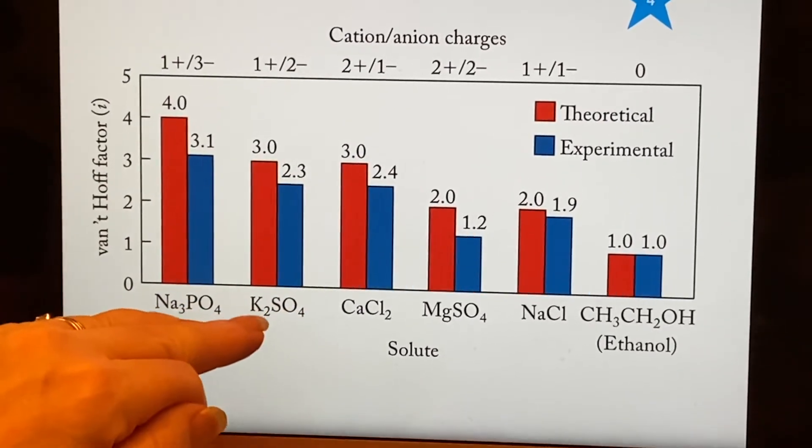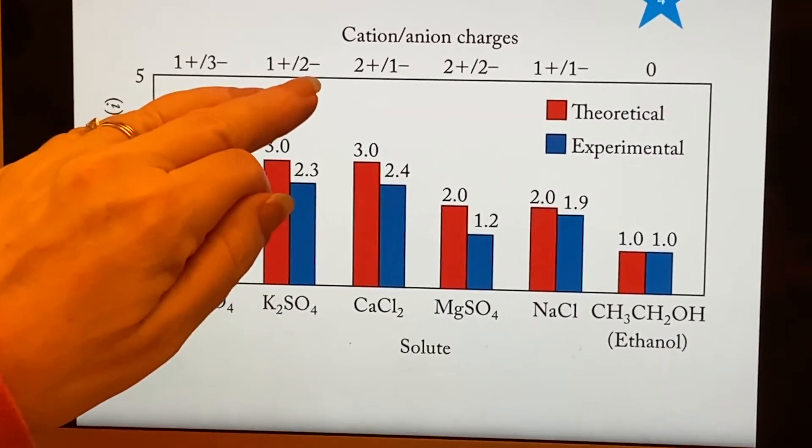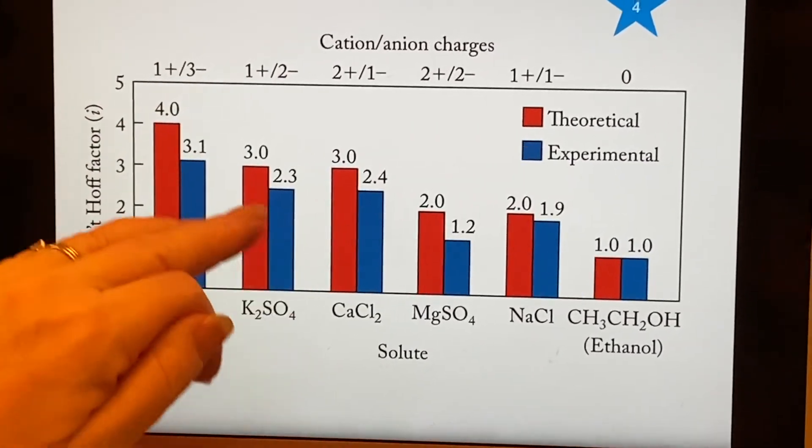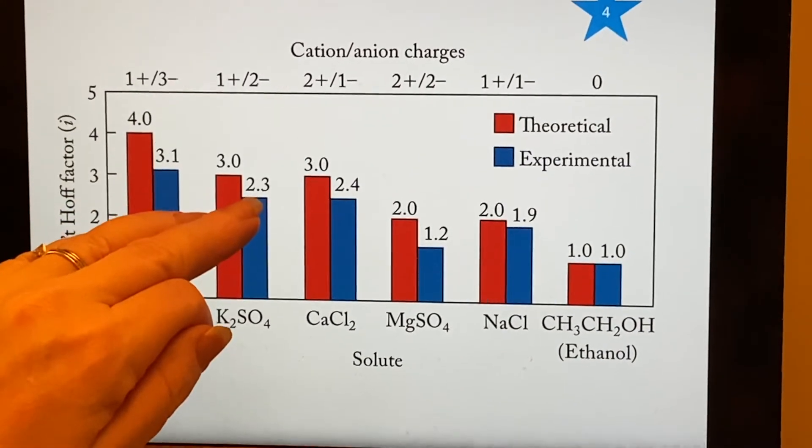And similarly, here's one where it's the other way around. The positive charges are single positives, and the negative ion is a negative two. But still, again, we expected a three. We only got a 2.3.